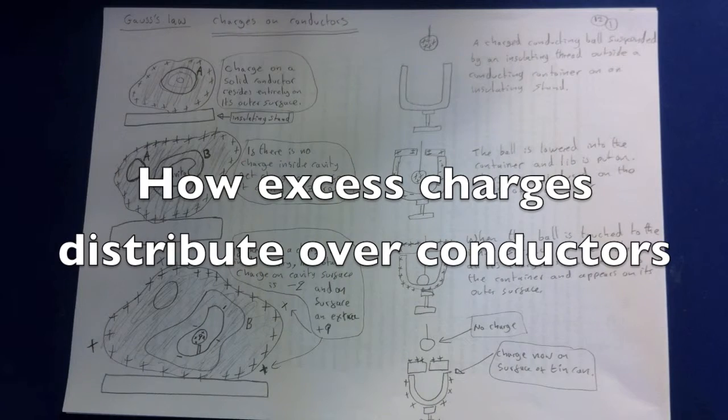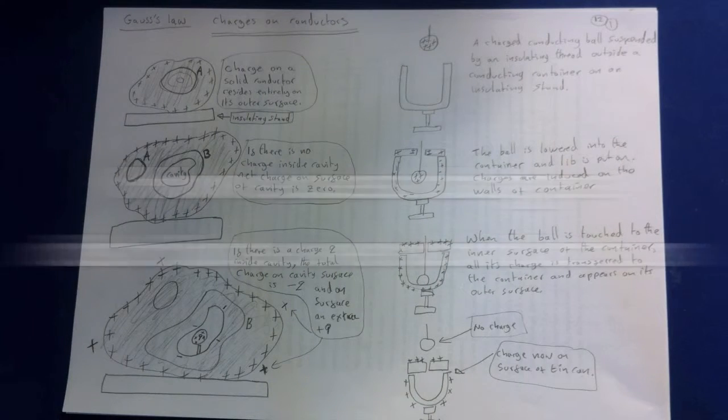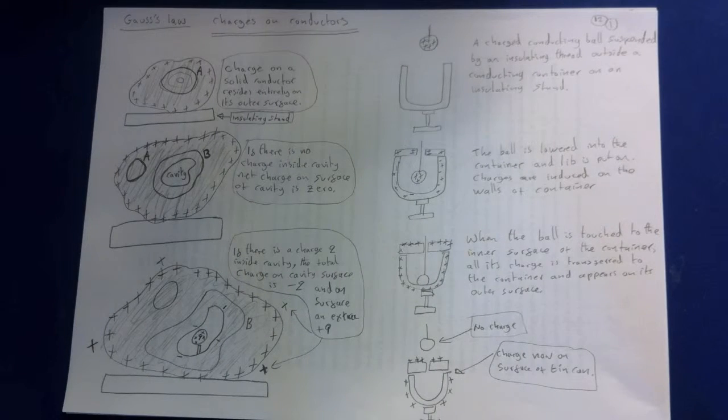In any electrostatic situation with a conductor, the electric field at every point within it is zero. Also, when excess charge is placed on a solid conductor, the charge is located entirely on the surface of the conductor.